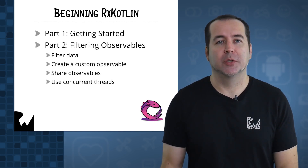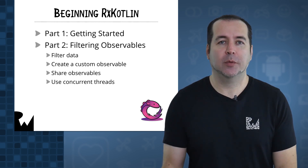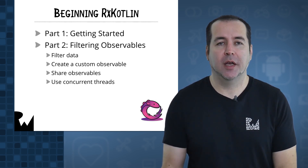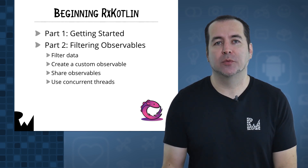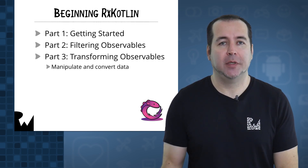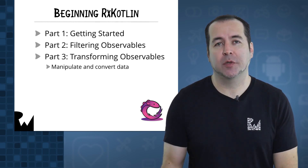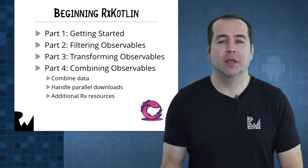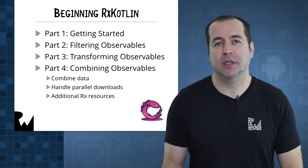In part two, you're going to jump right into working with observables, starting with how to filter data emitted by them. You'll also learn how to create your very own custom observable, how to share observables to make your code really efficient, and how to manage concurrent threads really easily in RxKotlin. Part three is all about manipulating and converting data that comes from an observable. And finally, in part four, you'll learn how to merge data coming from multiple observables into one, including how to work with data coming from multiple web service downloads asynchronously.